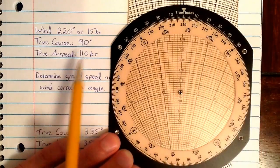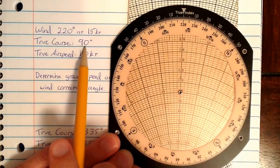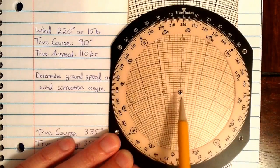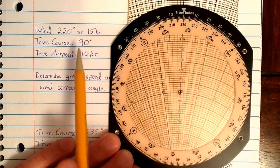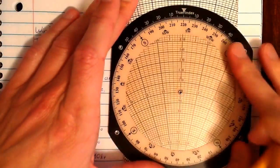So what do we know about what's actually happening? We know the true course. The true course is 90 degrees. We don't yet know our ground speed, so we're going to start by simply setting our true course.